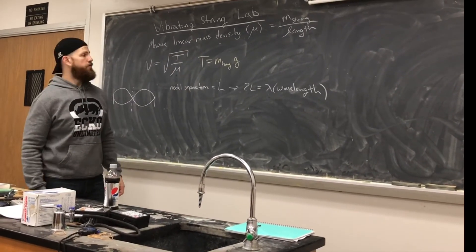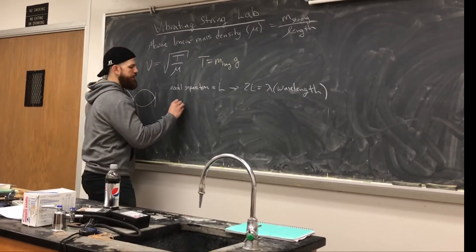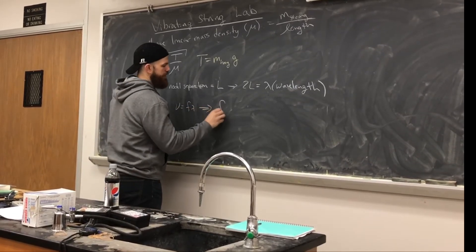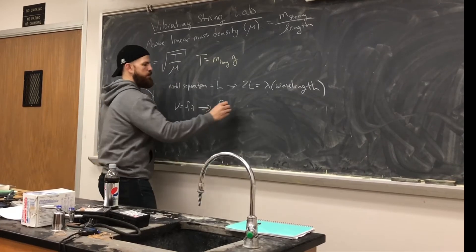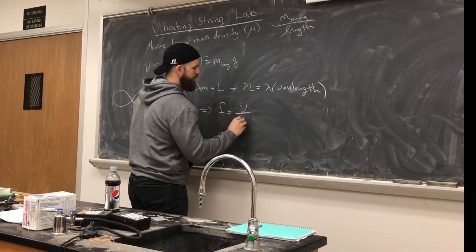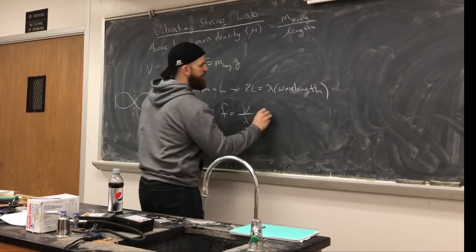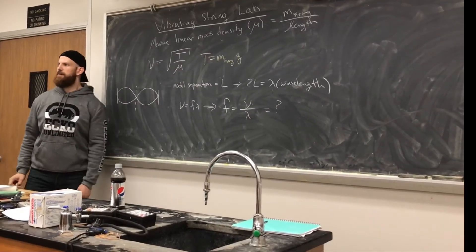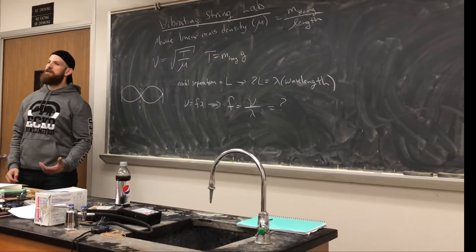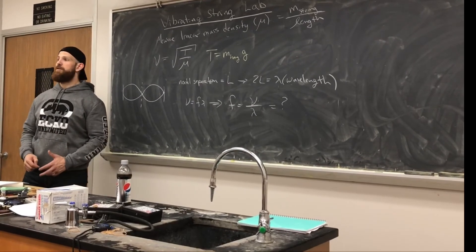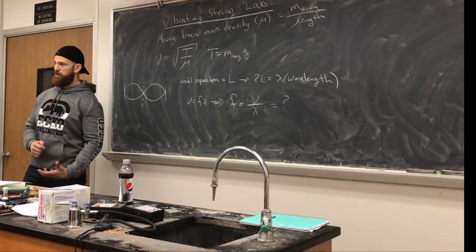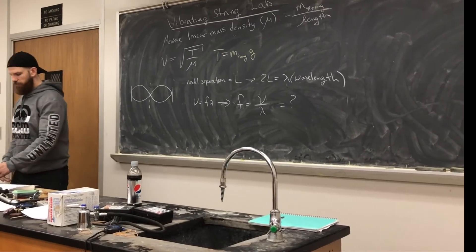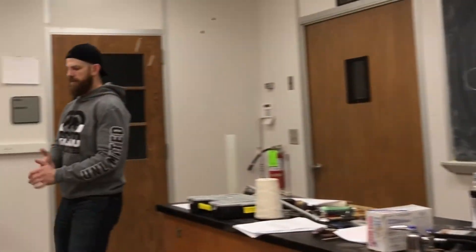From there, you know V equals F times lambda, so F equals wave velocity divided by lambda. That's the value you're going to calculate. I'll come around the room and check your answers — I won't tell you the total frequency until the end. Once you get the right answer, we'll move on to the next step.